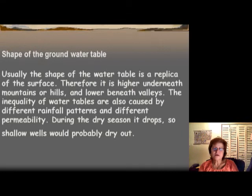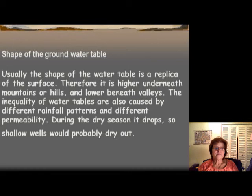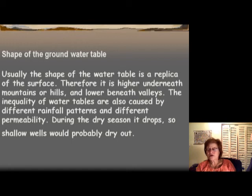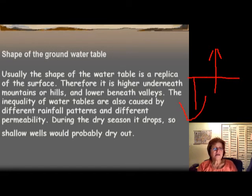The shape of the water table is usually a replica of the surface, so it is higher underneath mountains or hills and lower underneath valleys. Irregularities in the water table can also be caused by irregular precipitation patterns and different permeability. When it is raining the water table goes up, and during drought it goes down. If your well is very shallow, it might dry out during a dry season — which is not a good idea.